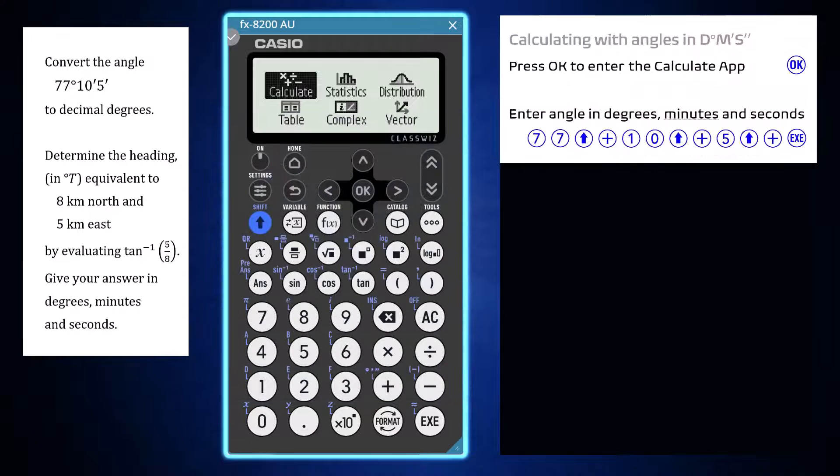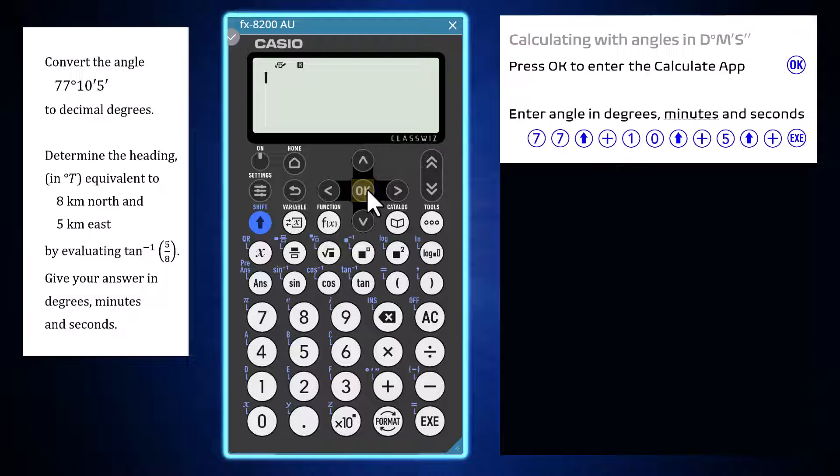Open the Calculate app by pressing OK or Execute. To enter an angle in sexagesimal format, enter the degrees followed by shift then the plus key to enter the degrees symbol, then enter the minutes followed by shift and plus, then the seconds by shift and plus once more, followed by Execute.